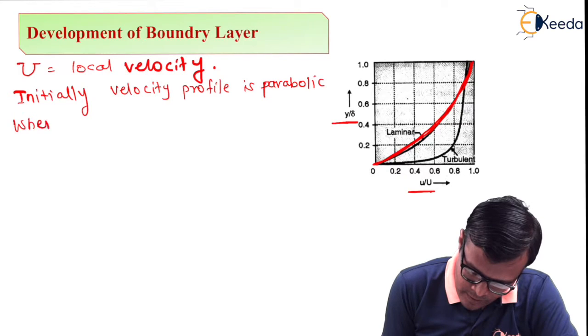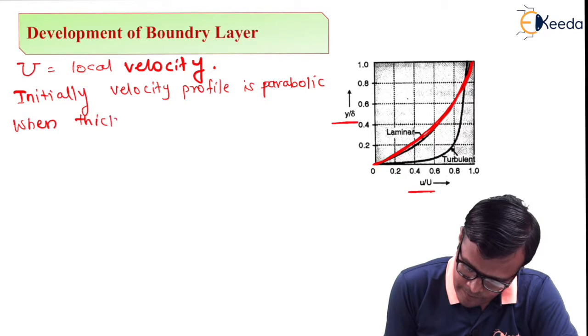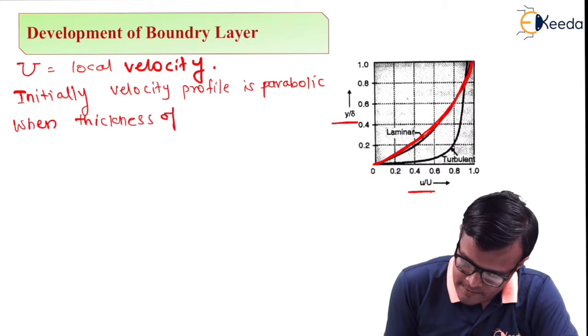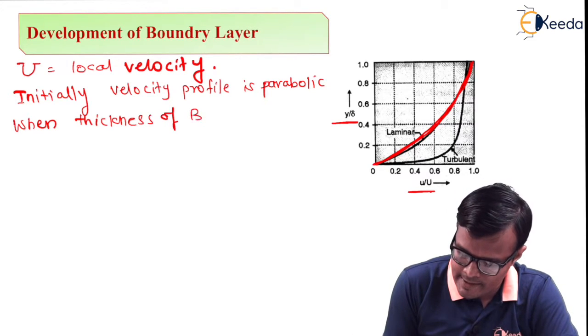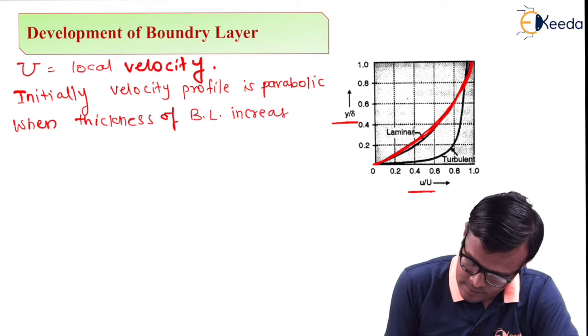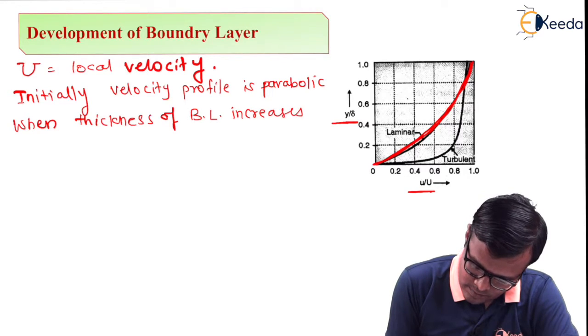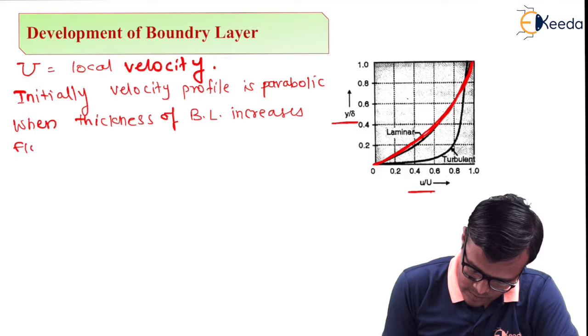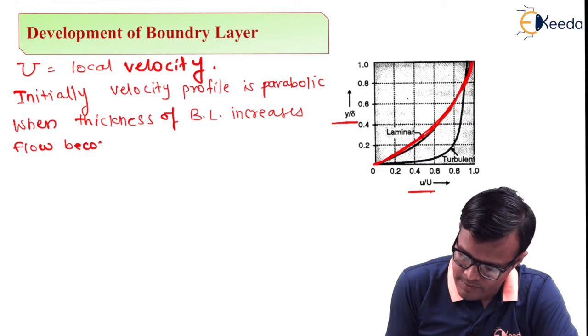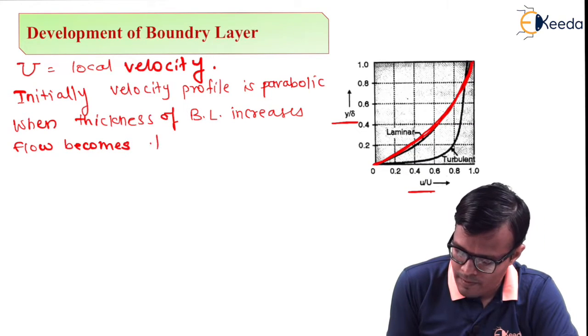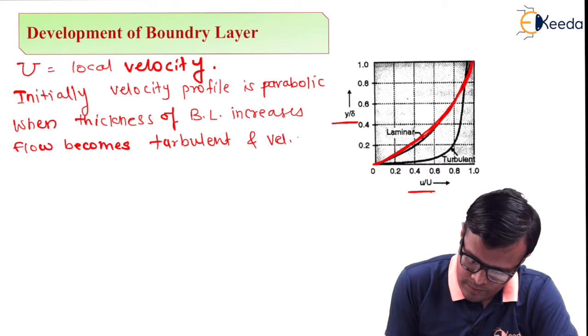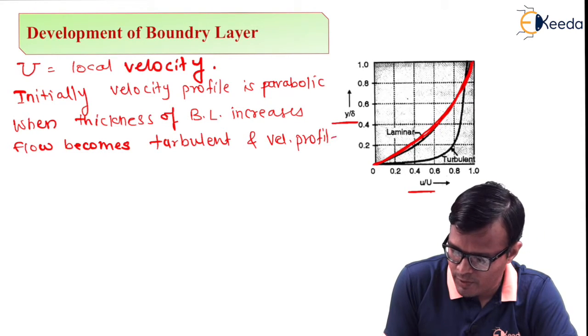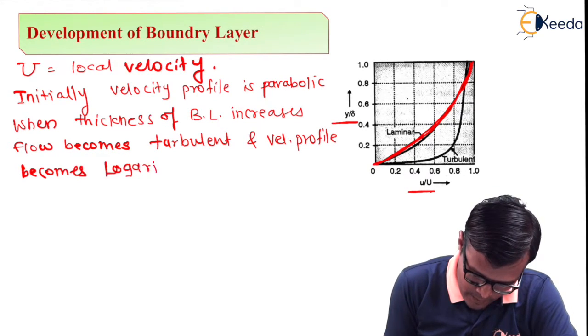Further, when thickness is increased, when the thickness of boundary layer increases, flow becomes turbulent and velocity profile becomes logarithmic.